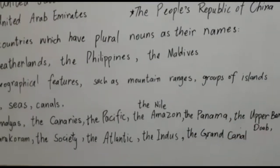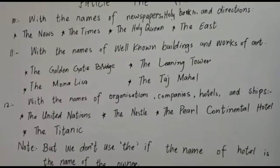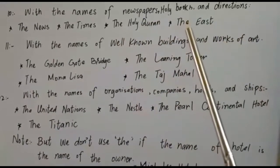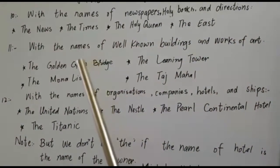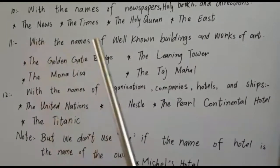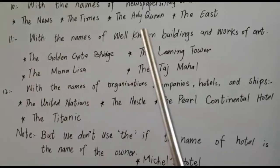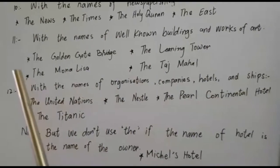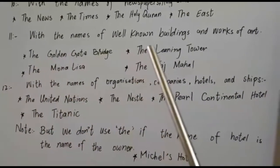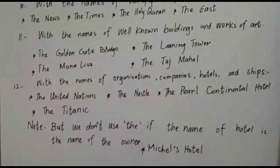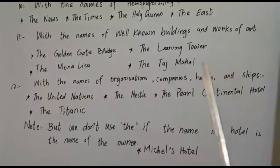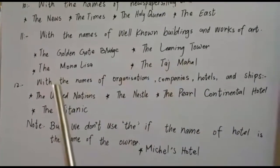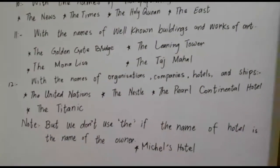Rule number 10: 'the' is used with the names of newspapers, holy books, and directions. For example: the News, the Times — names of newspapers. The Holy Quran. The East, the West. Rule number 11: 'the' is used with the names of well-known buildings and works of art. For example: the Golden Gate Bridge, the Leaning Tower, the Mona Lisa, the Taj Mahal.